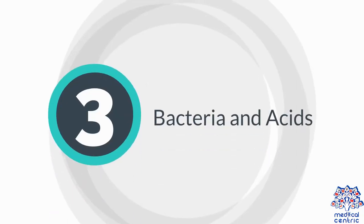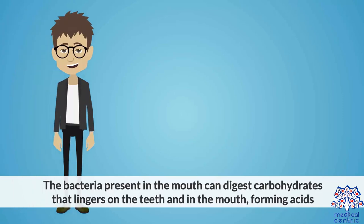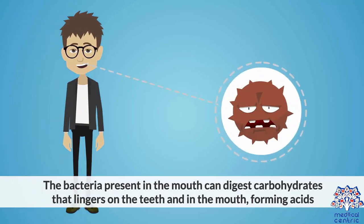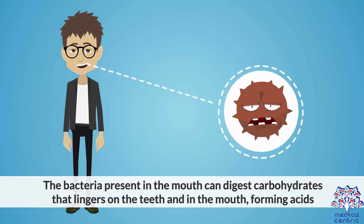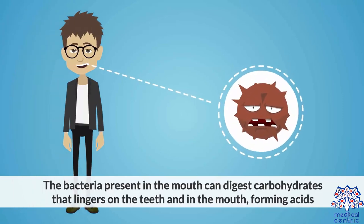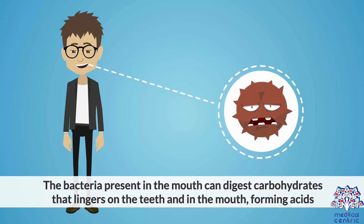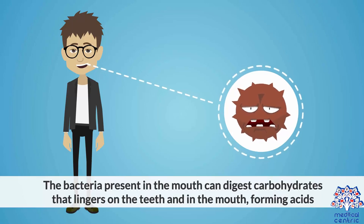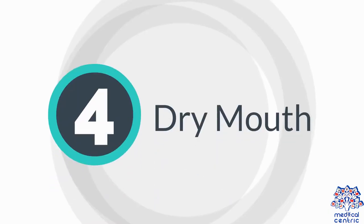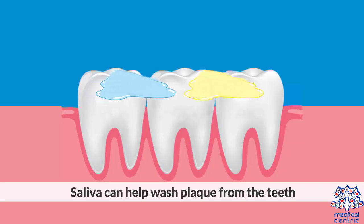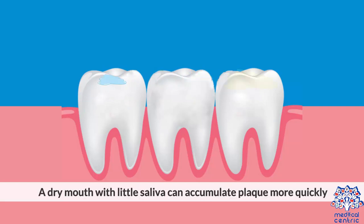Bacteria and acids. The bacteria present in the mouth can digest carbohydrates that linger on the teeth and in the mouth, forming acids. Dry mouth. Saliva can help wash plaque from the teeth. A dry mouth with little saliva can accumulate plaque more quickly.